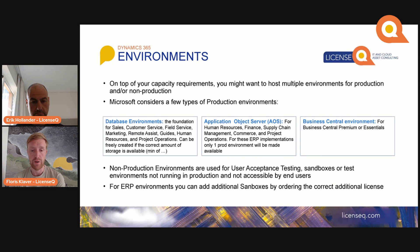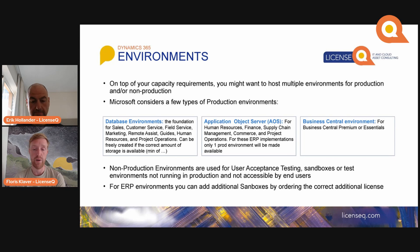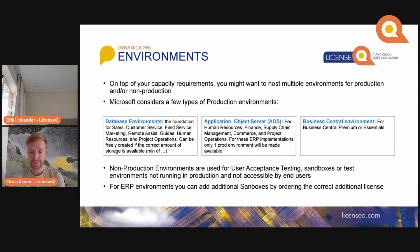On top of your capacity requirements, you might want to host multiple environments for production or non-production. Microsoft considers a few types of production environments. There are database environments, which are the foundation for Sales, Customer Service, Field Service, Marketing, etc., and can be freely created if the correct amount of storage is available — a minimum of one gigabyte per additional environment. Then there are Application Object Server environments for ERP. If you need additional production environments you can buy these AOS environments, but these will be at an additional charge and need to be set up in conjunction with Microsoft Business Central.